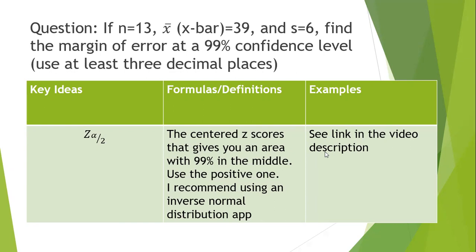So this inverse normal distribution app, as long as you click between and put the area up top and keep the mean at zero and the standard deviation of one, will give you that z alpha over two.